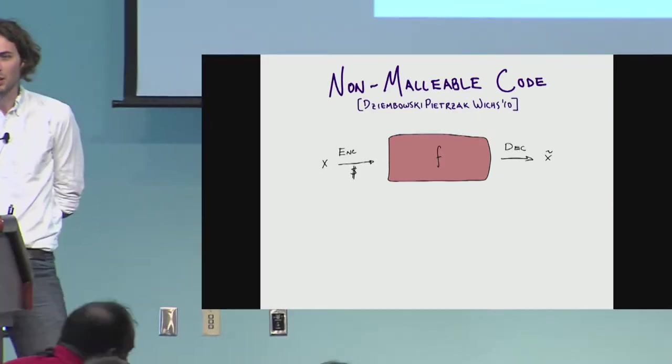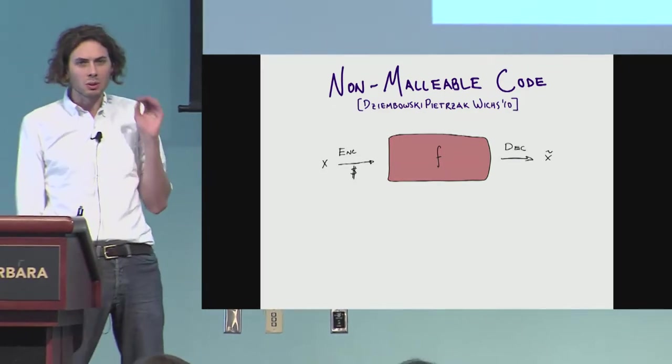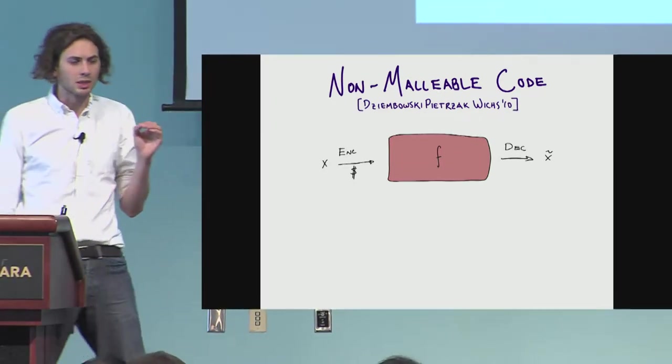So what is a non-malleable code? I'll tell you what the decision tree is about halfway through the talk. A non-malleable code is a randomized encoding scheme.